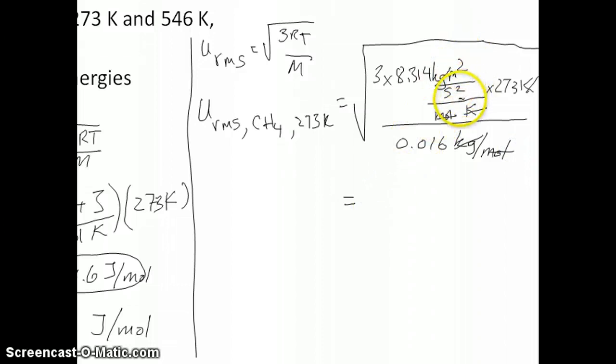We're left with just meter squared over second squared. And if you take a square root of meter squared per second squared, what you get, of course, is just meters per second. And in this case, at 273 Kelvin for CH4, you should get a speed, RMS speed, of about 652 meters per second.